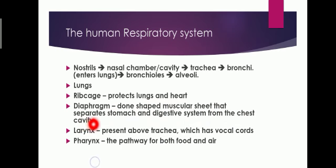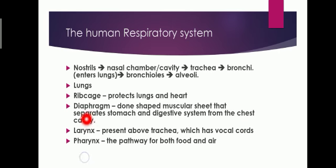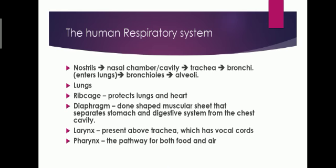Then is the larynx, which is present above the trachea and has vocal cords. The sound which is produced by us — like when we speak, shout, or sing — that is because of the larynx. The last one is the pharynx, which is a pathway for both food and air. The food and air pathways merge together, and that region is known as the pharynx.